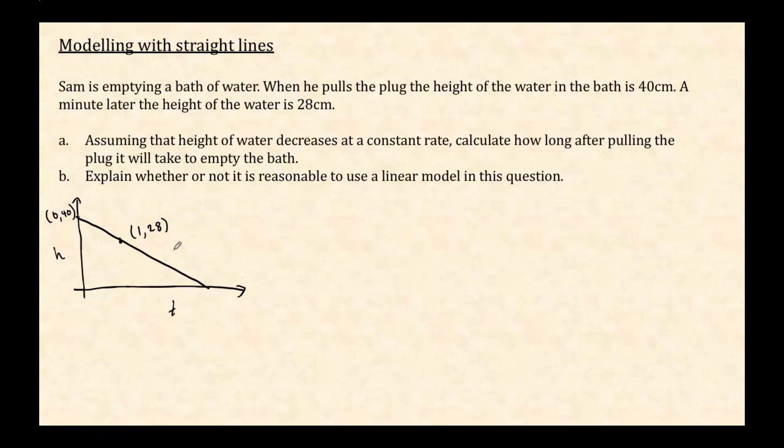Okay. So in order to work out what this point is, that is how long it takes the water to run out the bath, I only need to work out the equation of this line. Now, we already know that the y-intercept is 40. That's already known. So I know that it's going to look something like the height of the water is some gradient that I don't know, times t, plus 40. My job is to work out what that gradient is.